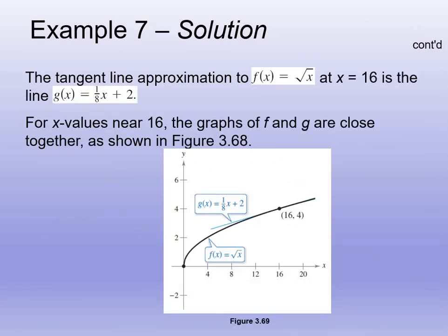Using the tangent line approximation of f(x) = √x at x = 16: the point is (16, 4). The derivative evaluated at 16 gives slope = 1/8. Using point-slope: y − 4 = (1/8)(x − 16), which gives the tangent line approximation y = (1/8)x + 2. We can see the square root function and its tangent line at x = 16 on the graph.